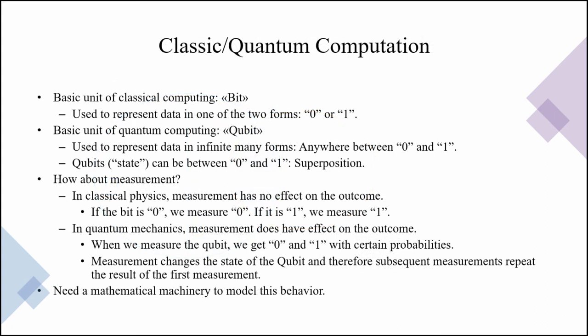So the basic unit of classical computation is a bit, as you all know, which takes on two mathematical forms, 0 and 1, to represent data. It could be a voltage, it could be a current, whatever the physical quantity that represents these mathematical signs. On the other hand, we use qubits to represent information in infinitely many forms. Because a qubit can be between 0 and 1, anywhere between them, the state of being somewhere between 0 and 1 is usually called superposition.